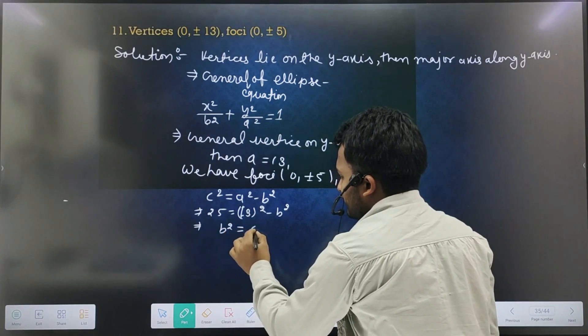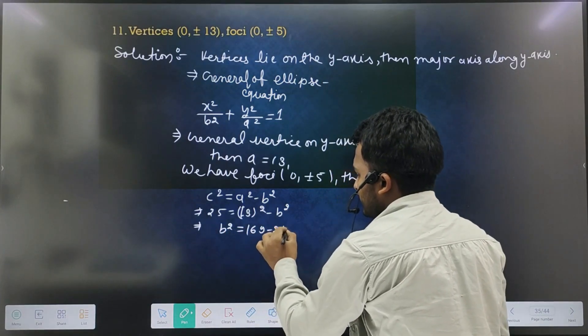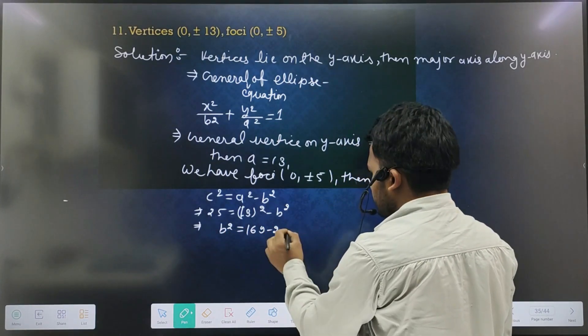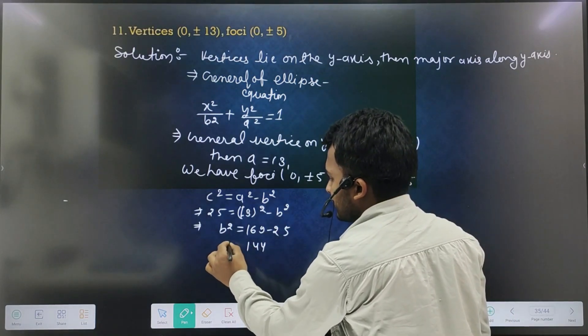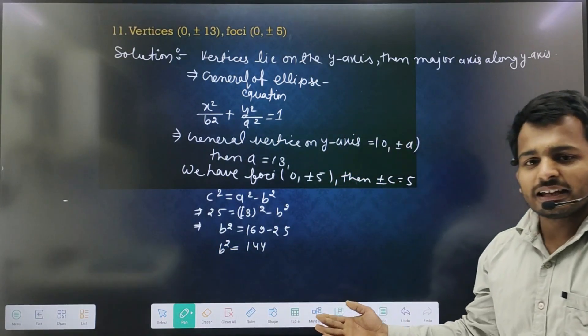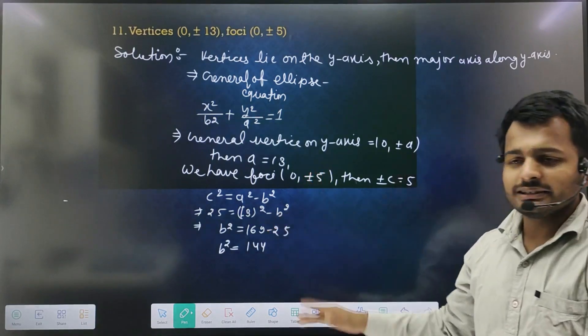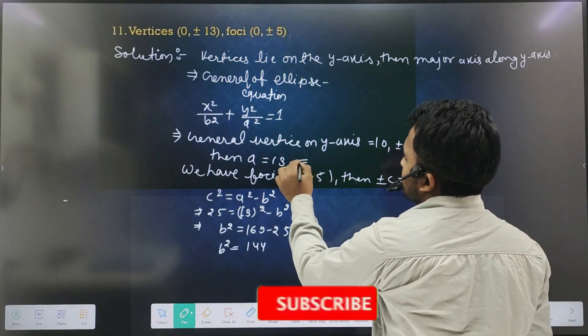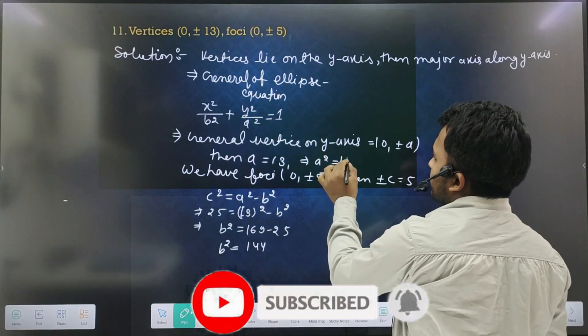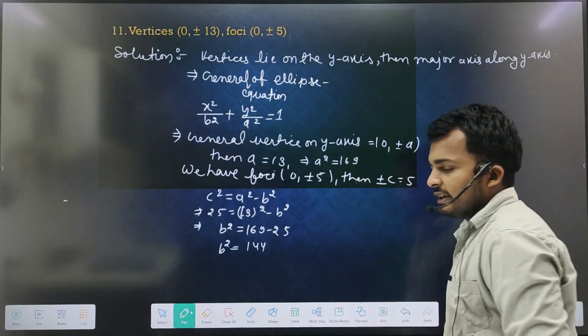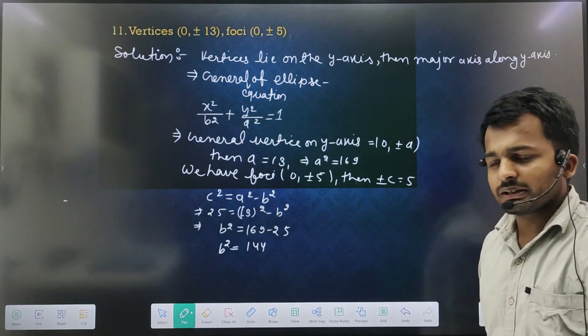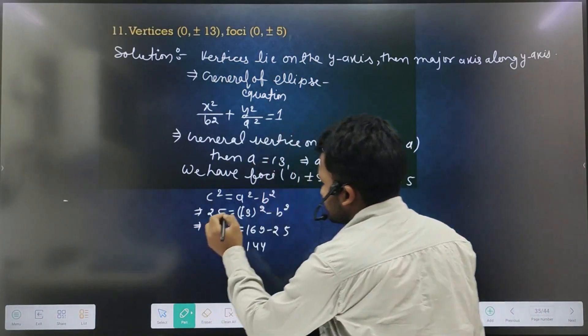b square equal to 69 minus 25, and what will be here? 144 equal to b square. Now you will see that a value is b value, so put it here. So here you will see a square equal to 169. So put a square value and put b square value.